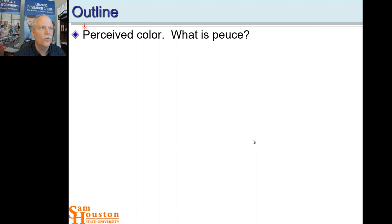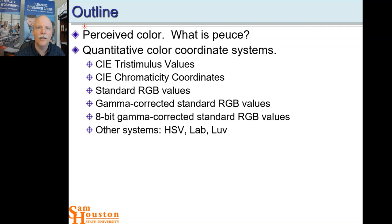We're going to talk about what we mean by color — that color is a perceived idea and that we've made up our own definitions of what colors mean. Then we'll get into the science behind color, the quantitative color systems including the Commission Internationale on Color. That gets into the CIE tristimulus values and chromaticity coordinates, standardized for red, green, and blue pixels in all of our displays and printing. We'll also look at other color systems and different colorants.